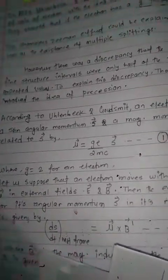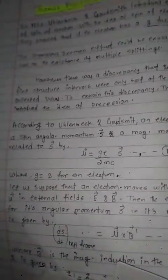This discrepancy is resolved by Thomas Precession. According to Uhlenbeck and Goudsmit, the electron possesses a spin angular momentum S, also called intrinsic angular momentum, and a magnetic moment μ, related to S by μ = GES / 2MC, where G equals 2 for the electron.